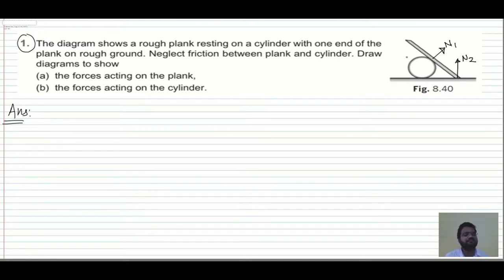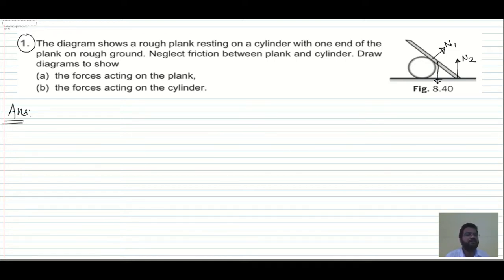Now we have to see other things. The mass of this rough plank is there, so that mass will contribute to the weight of this plank, and that weight will be M1 times g. Any other force? Yes, there is one force and that is the friction force. Because of the friction force only, this plank is resting at rest — it is resting on the cylinder.